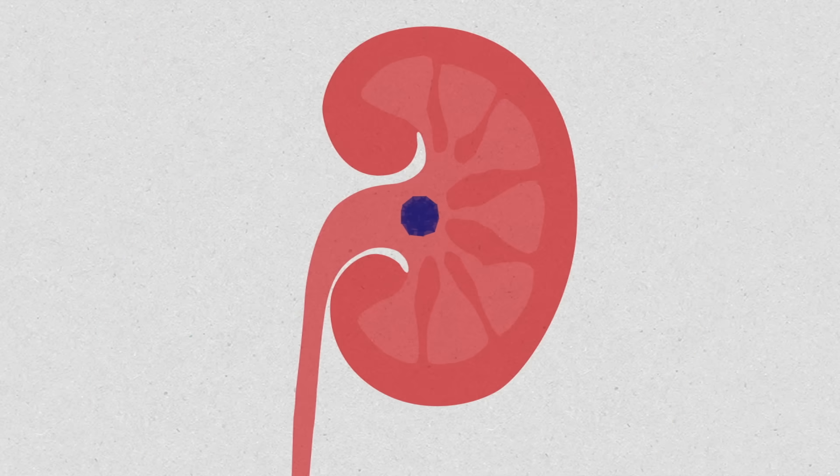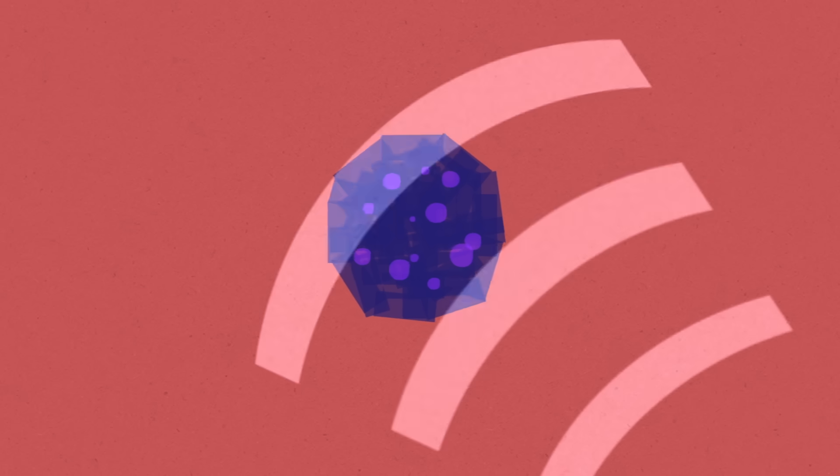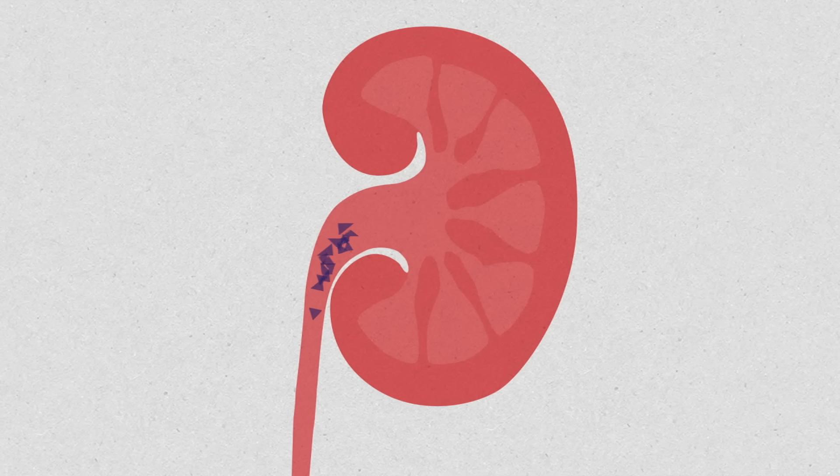For medium-sized stones up to about 10 mm, one option is pulverizing them with sound waves. Extracorporeal shockwave lithotripsy uses high-intensity pulses of focused ultrasonic energy aimed directly at the stone. The pulses create vibrations inside the stone itself, and small bubbles jostle it. These combined forces crush the stone into smaller pieces that can pass out of the body more easily.